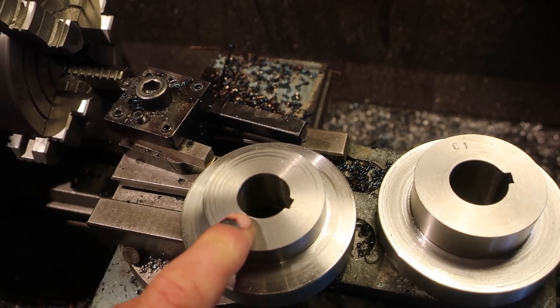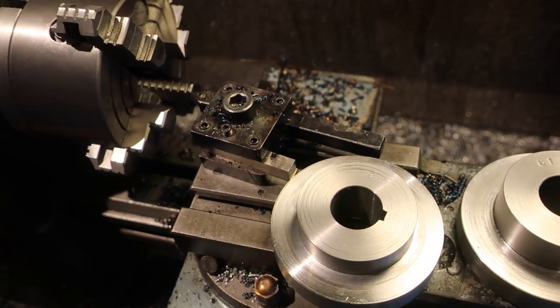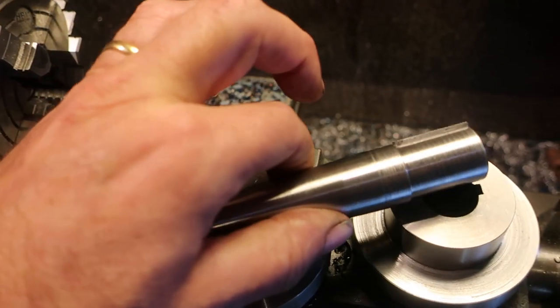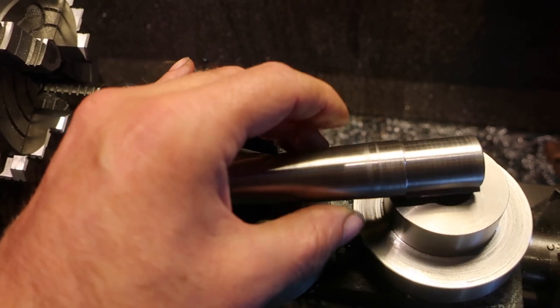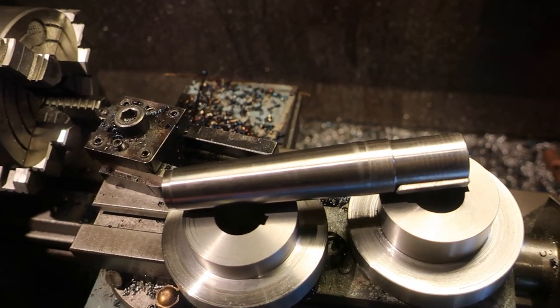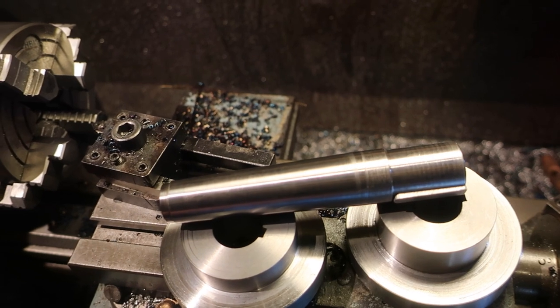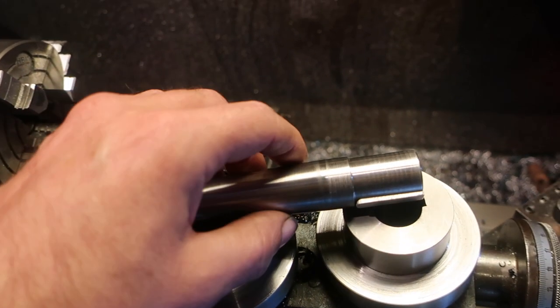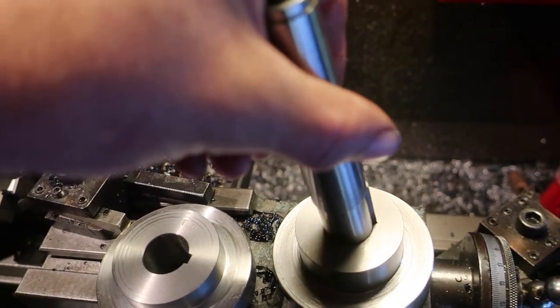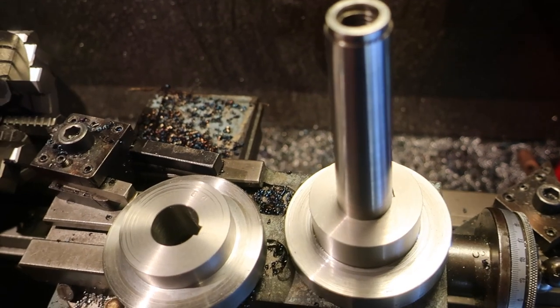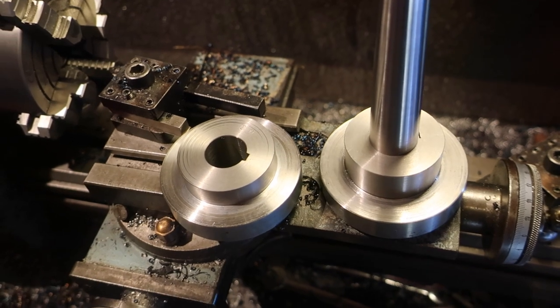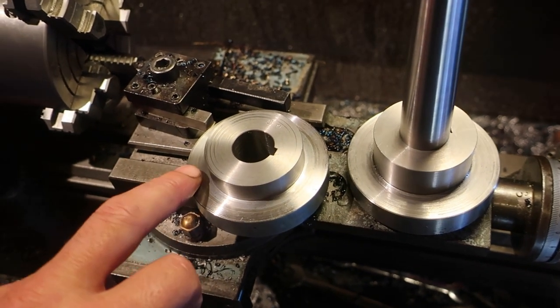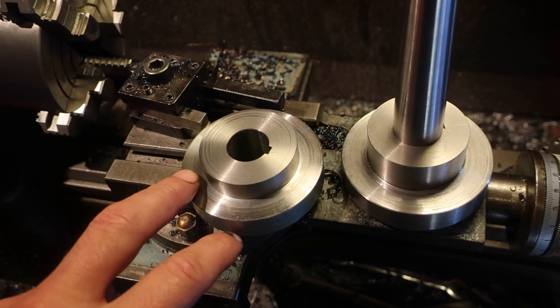The reason for that is I have a little keyed mandrel which I made so I can cut the teeth. That drops in there quite nicely. So we're going to get on with cutting the diameters and angles on these.